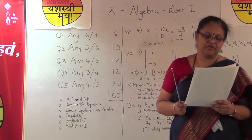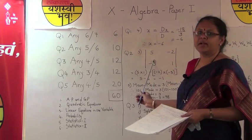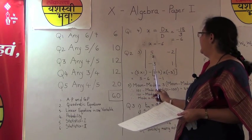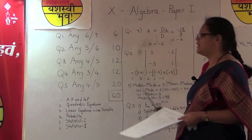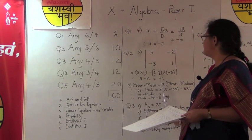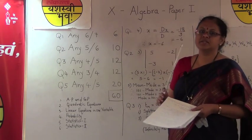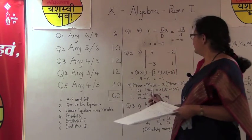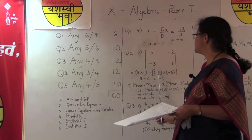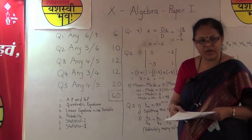Sum number 3: find the value of the following determinant. Write down the determinant as given in the question paper and remember the formula a times d minus b times c. So you get the value as 5 × 1 − (−2) × (−3). Do not forget the basics of integers: minus into minus gives plus 6. When you subtract it from 5, you get the value of the determinant as minus 1.